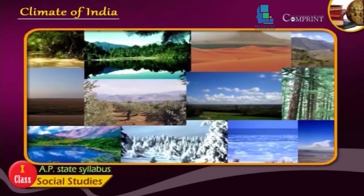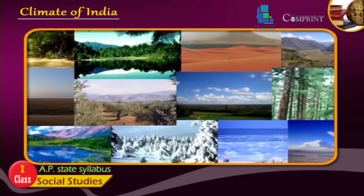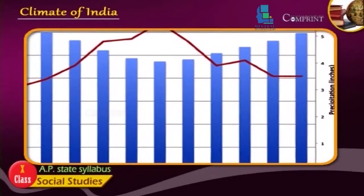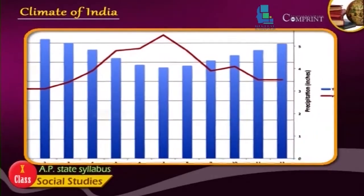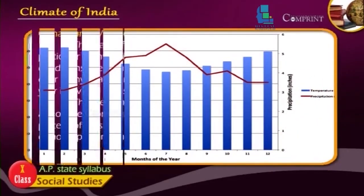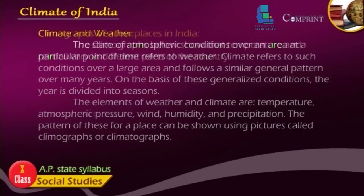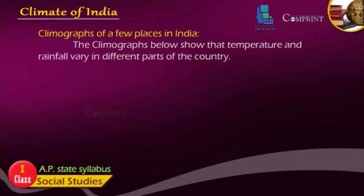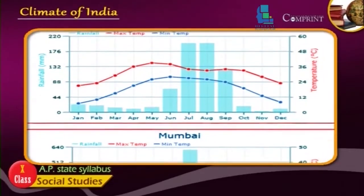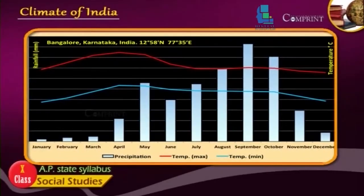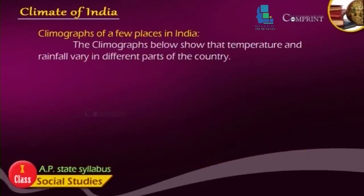The elements of weather and climate are temperature, atmospheric pressure, wind, humidity, and precipitation. The pattern of these for a place can be shown using pictures called climographs or climatographs. The climographs of a few places in India show that temperature and rainfall vary in different parts of the country.